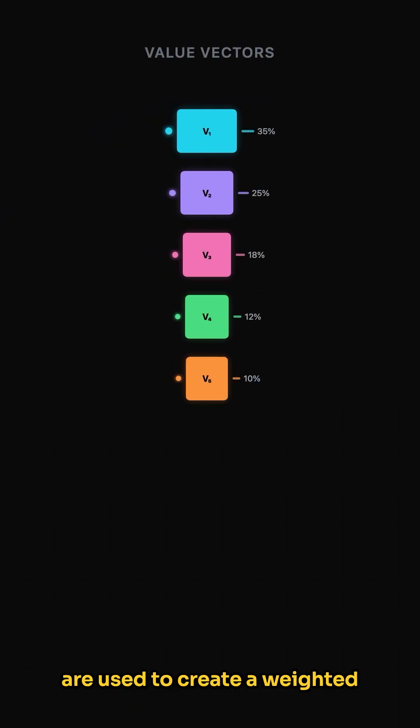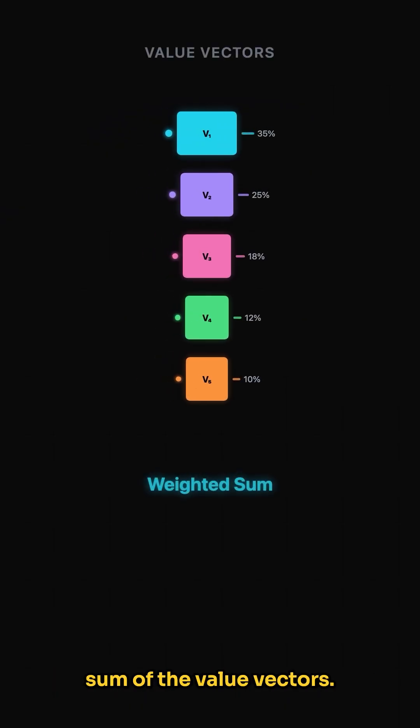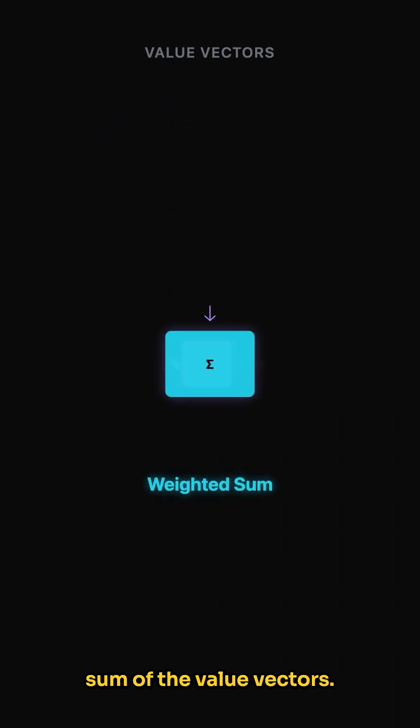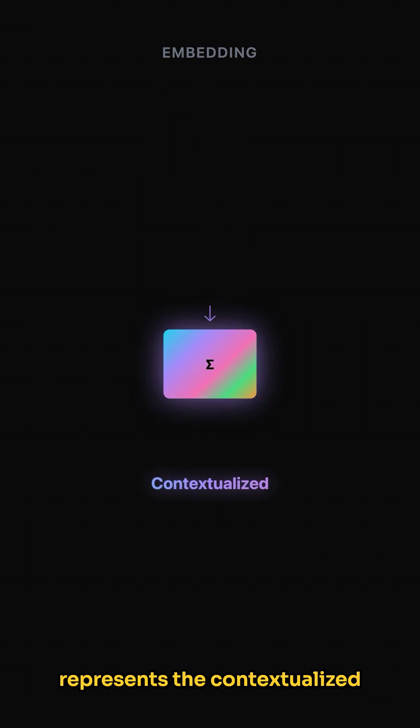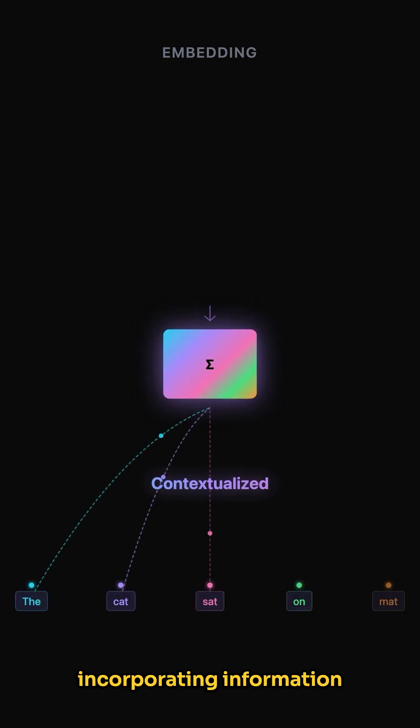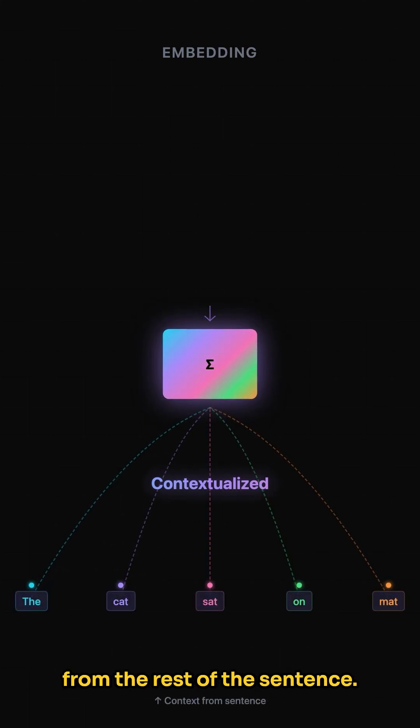Finally, these attention weights are used to create a weighted sum of the value vectors. This weighted sum represents the contextualized embedding of the word, incorporating information from the rest of the sentence.